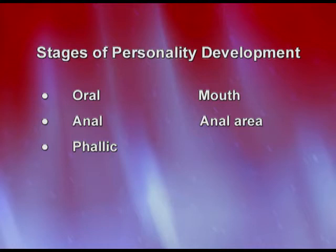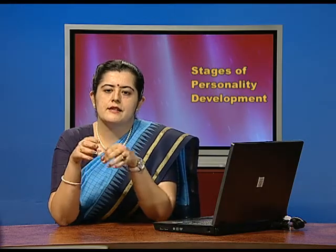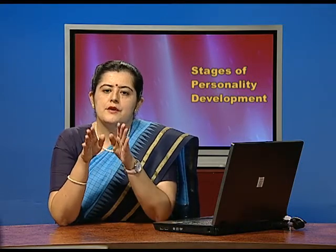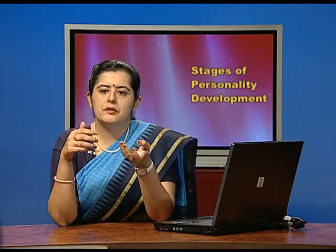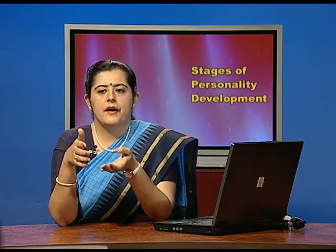The third is the phallic stage, from 4 to 6 years, where the focus is on the genitals and sexual energy begins to emerge. Children become aware of gender differences and sexuality. In this stage, two complexes arise based on Greek mythology: the Oedipus complex for boys — derived from the king who wanted to kill his father and marry his mother — and the Electra complex for girls, where girls unconsciously want to replace the mother and marry the father. Freud observed young girls putting on makeup and sarees as symbolic of this.